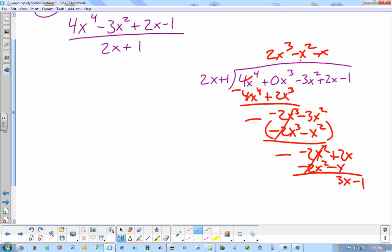What do you multiply 2x by to get 3x? Oh, here's a little tricky. 3 halves. Now, because I made this one up, we've got a little fraction action here. 3 halves times 2x is 3x, right? So that's 3x. 3 halves times 1 is 3 halves.